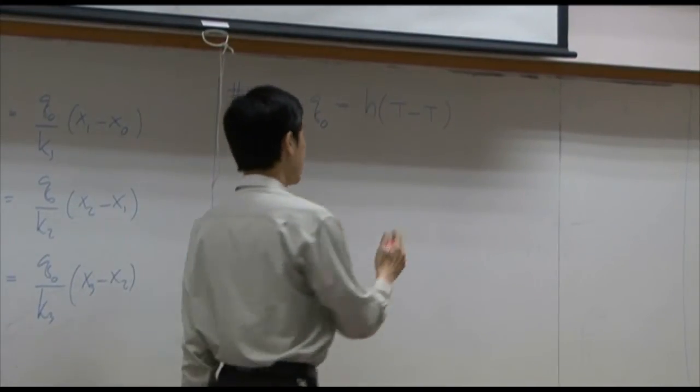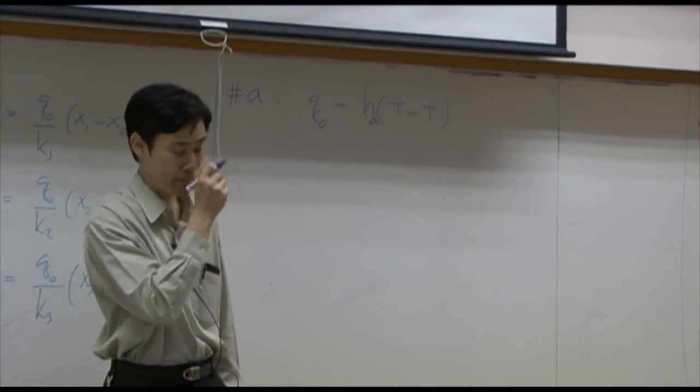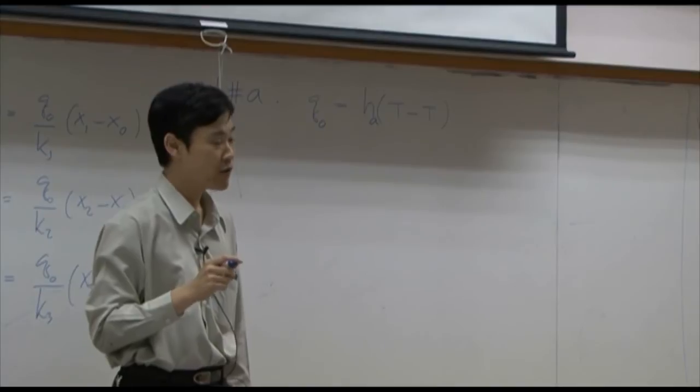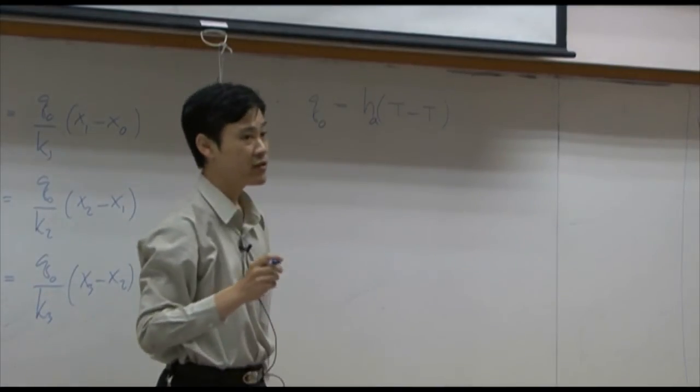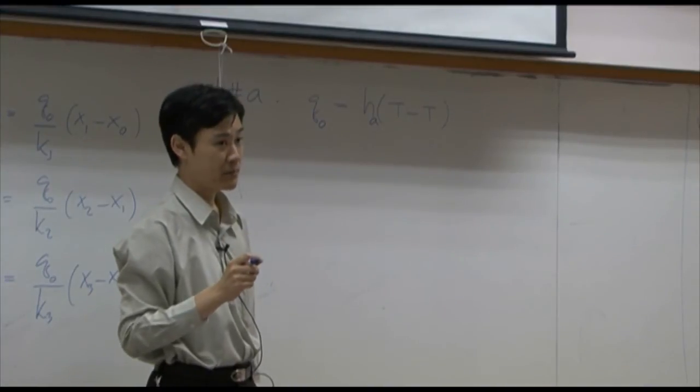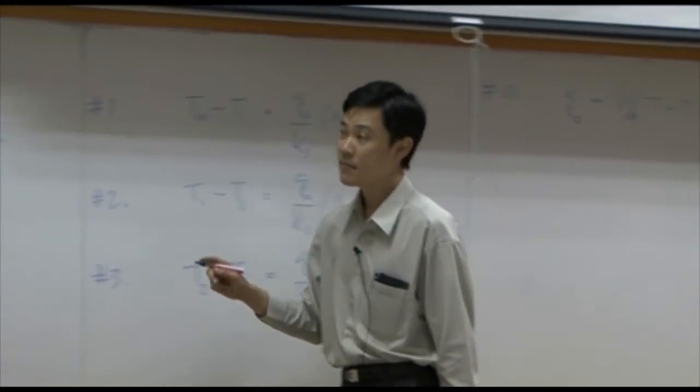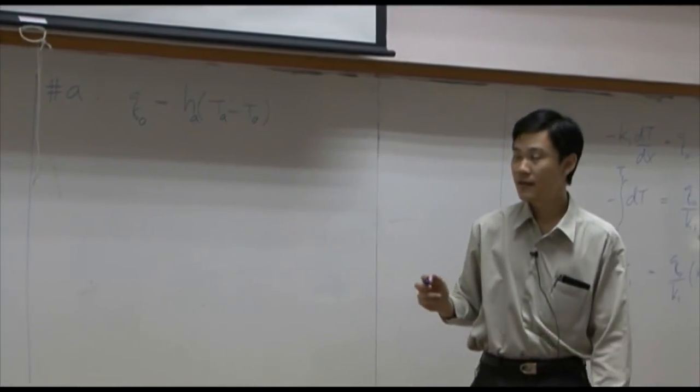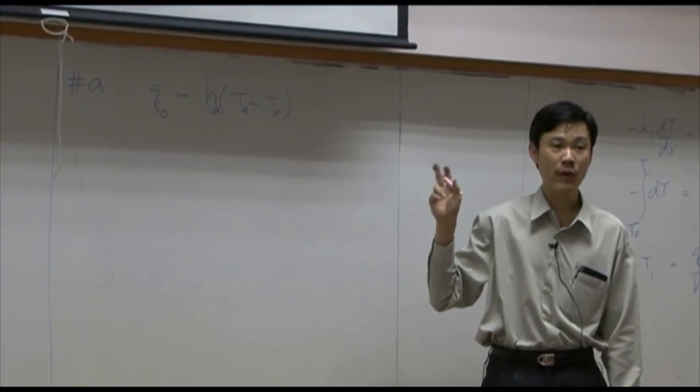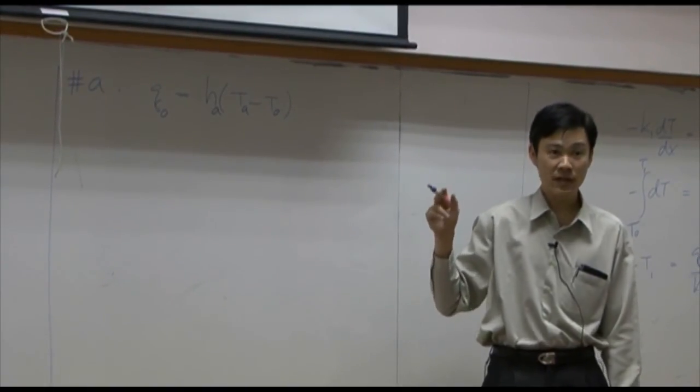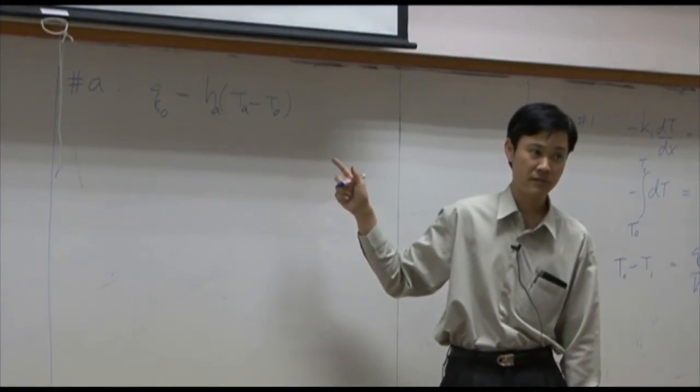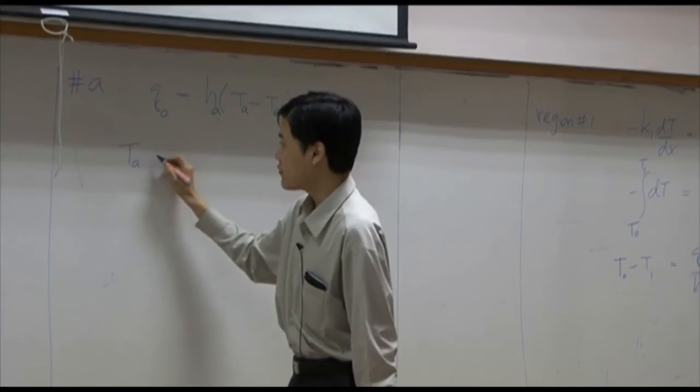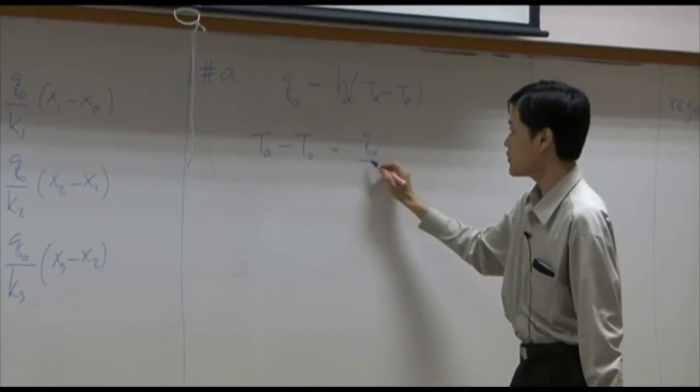Heat transfer coefficient in A layer is called hA, for example. And then, when you use Newton Law of Cooling, driving force here, you need to put high temperature subtracted by low temperature. High temperature is TA, low temperature is T0. In Newton Law of Cooling, you need to put direction of heat transfer by yourself. You need to know that heat transfer from high temperature to low temperature. So if I rearrange the equation, I will get TA minus T0 equal to q0 divided by hA.